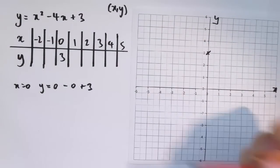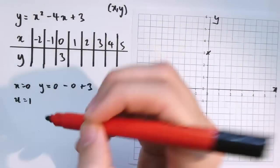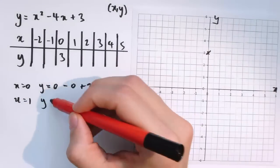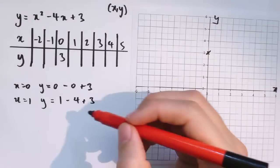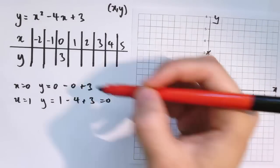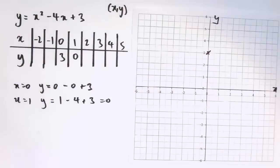To be systematic about it, if I wanted to do x equals 1, I would do y equals 1 squared, which is 1, minus 4 times 1, plus 3, which gives us 0. And I could do that for all of the different values.